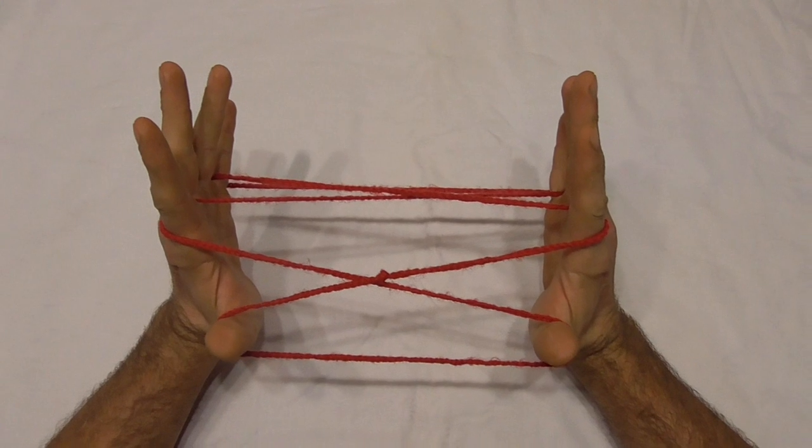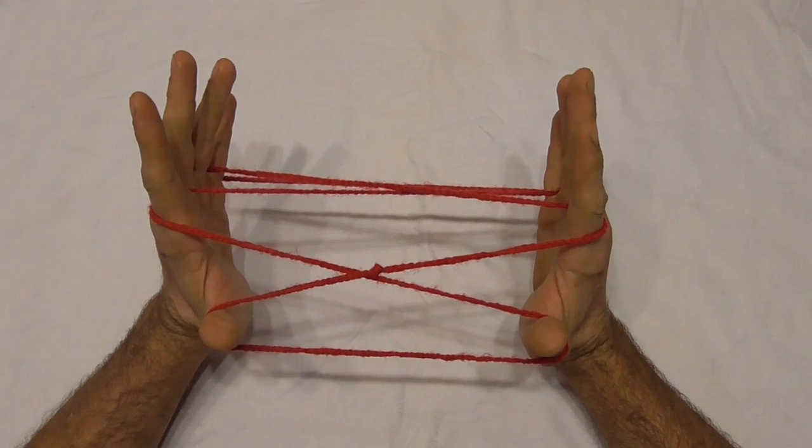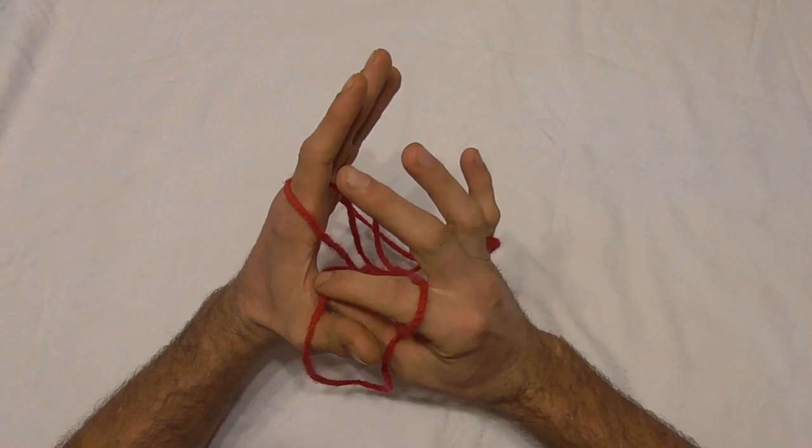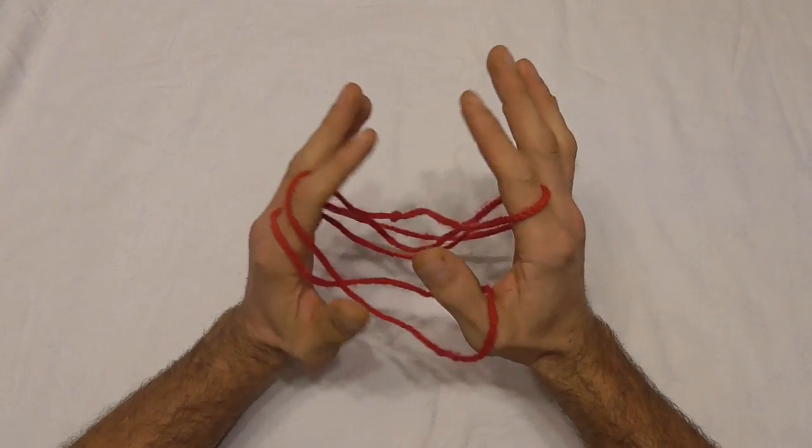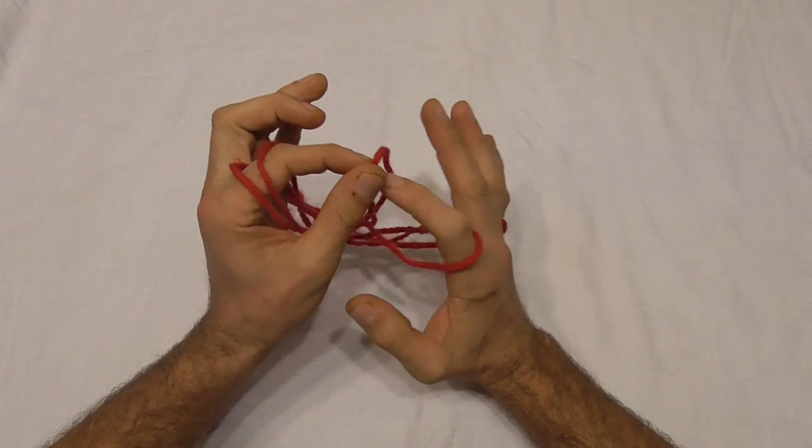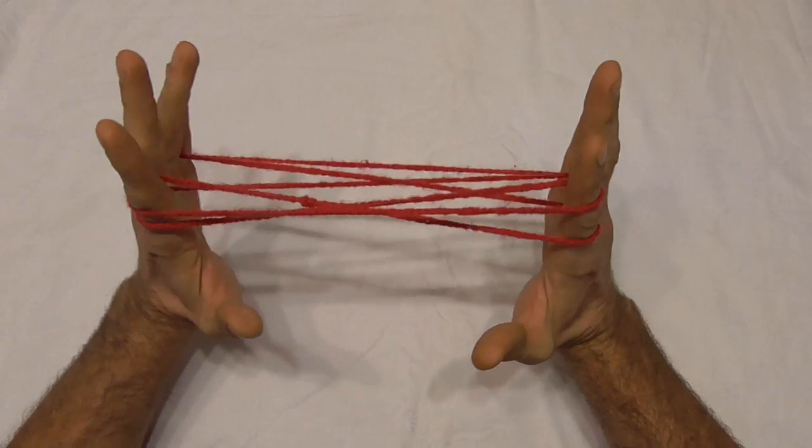And now I want to get my thumb loops onto my pointer fingers. So I'm just going to pick up the thumb loop and put it on the pointer fingers without twisting it, bring it back.